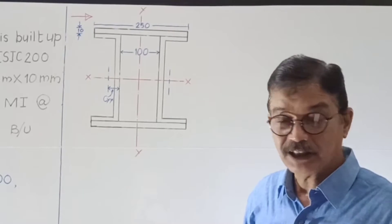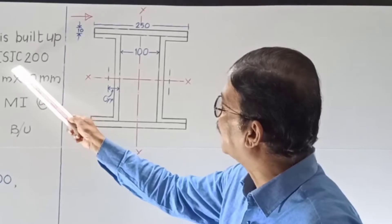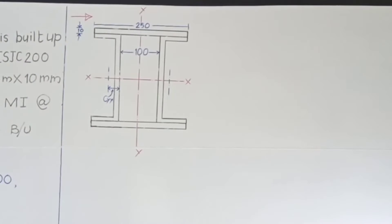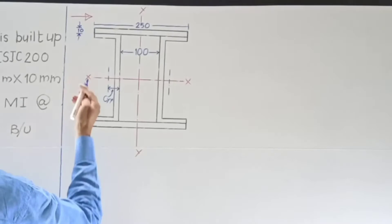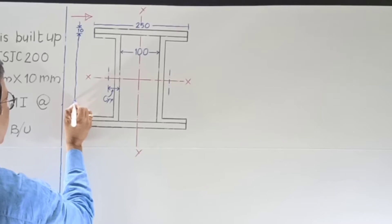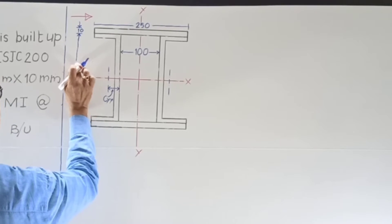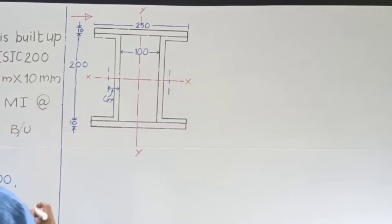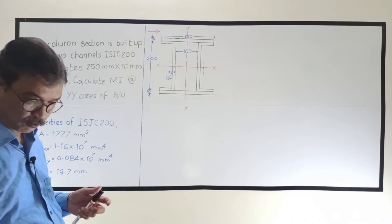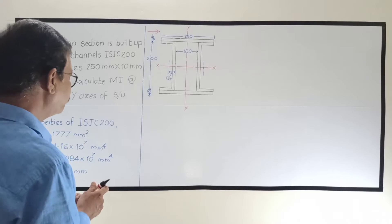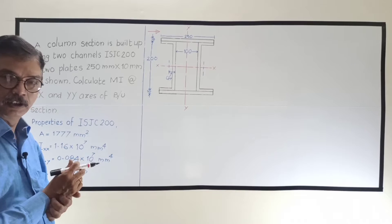The overall width is 250 mm. The overall depth: the channel section is ISJC200, so the depth of the channel is 200 mm, plus 10 mm plate at top and 10 mm plate at bottom, giving an overall depth of 220 mm. We want to find the moment of inertia of this built-up section about the horizontal XX axis and the vertical YY axis. Let us start with IXX.